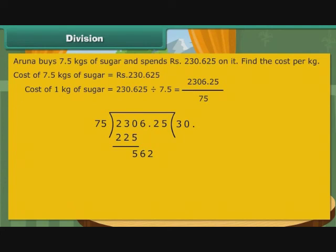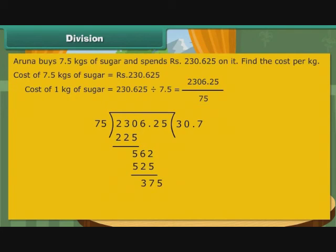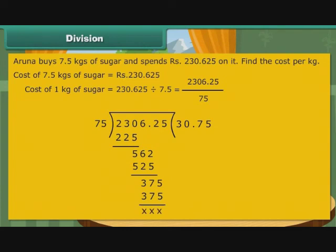The new number 562 holds 7 times 75, that is 525. Subtract and write the difference 37 below. Bring 5 down; the new number formed is 375. It holds 5 times 75 exactly. Write 5 to the right of 7, and 375 beneath 375. Subtract; as the difference is 0, the division operation ends. Therefore, the cost of 1 kg of sugar is Rs. 30.75.